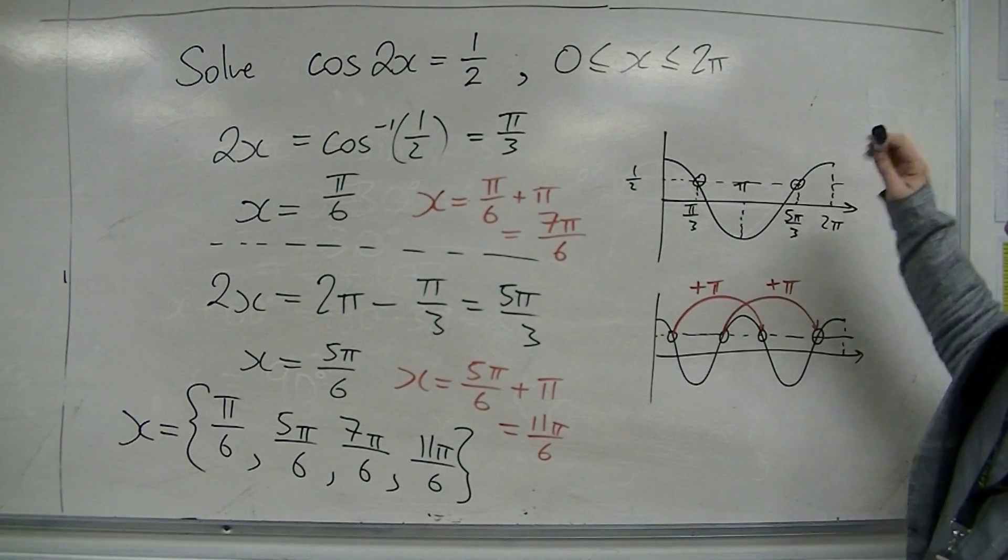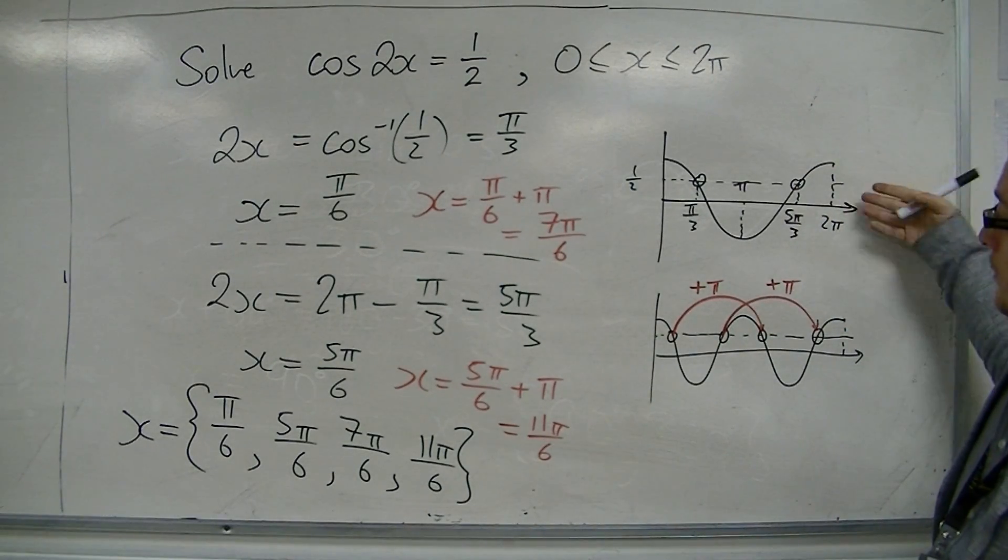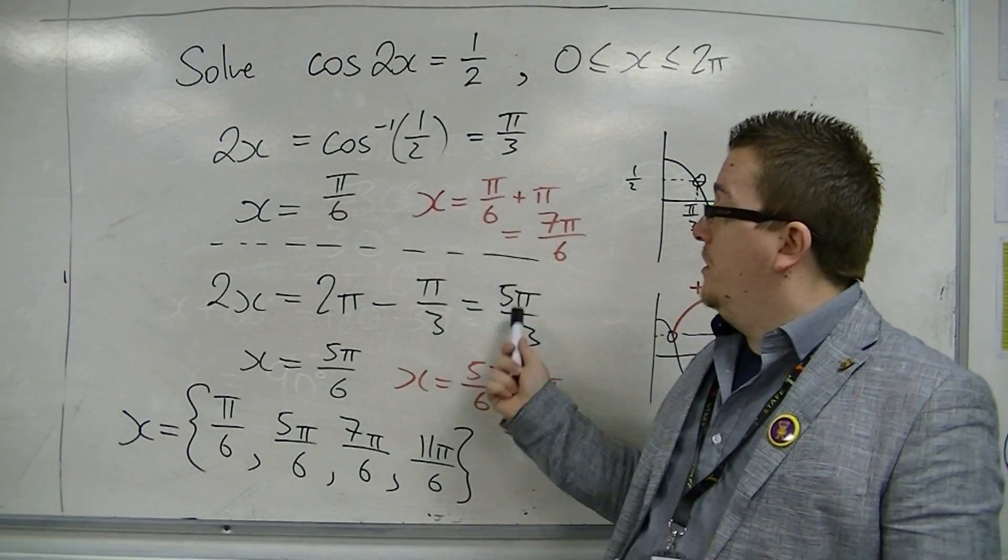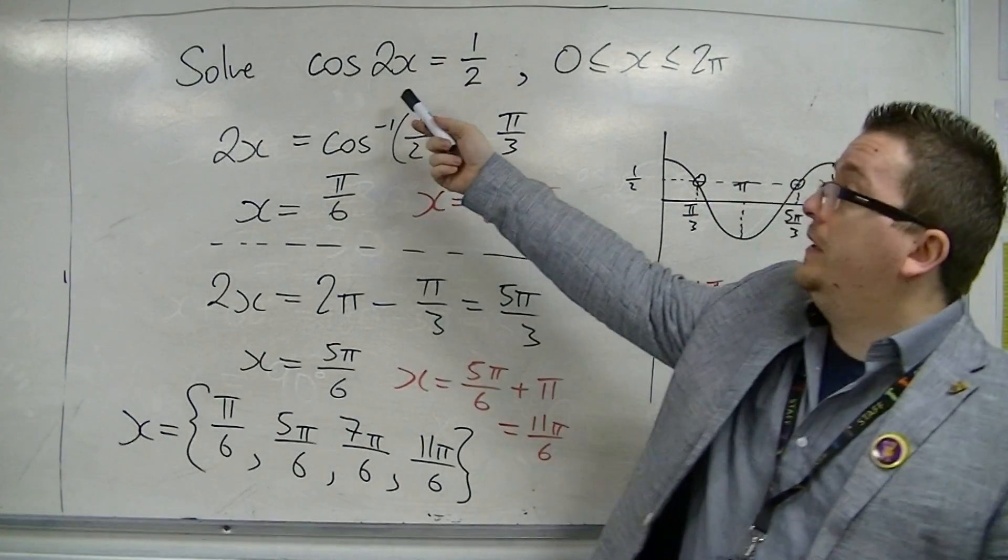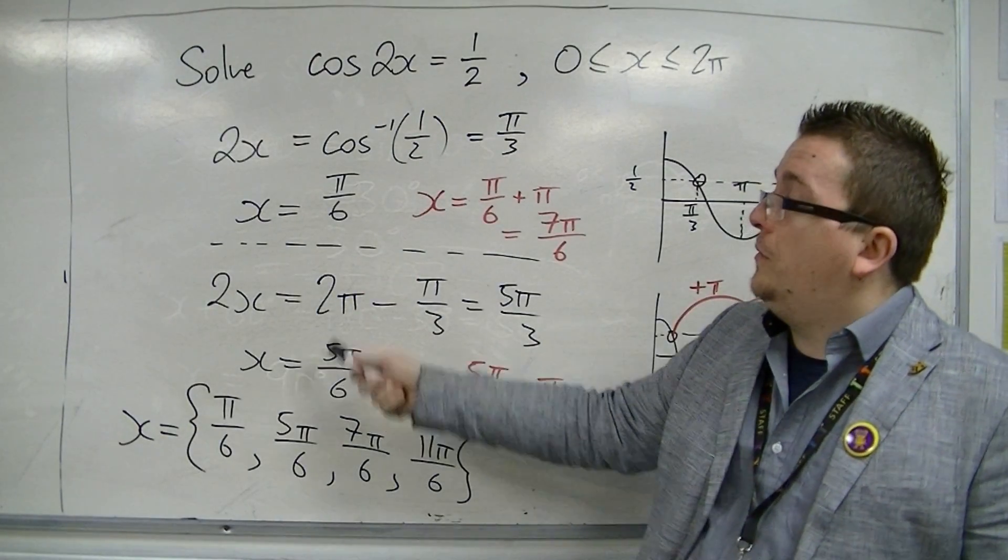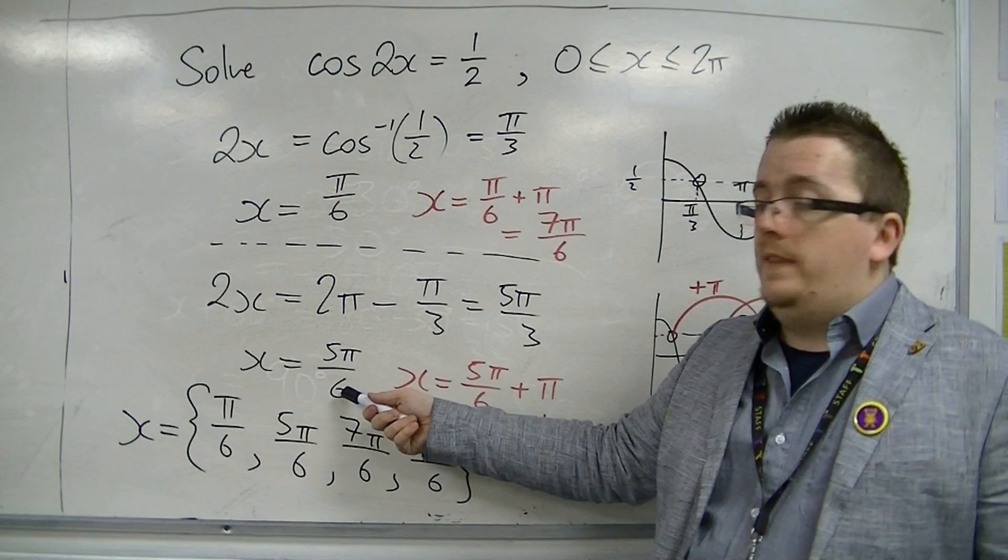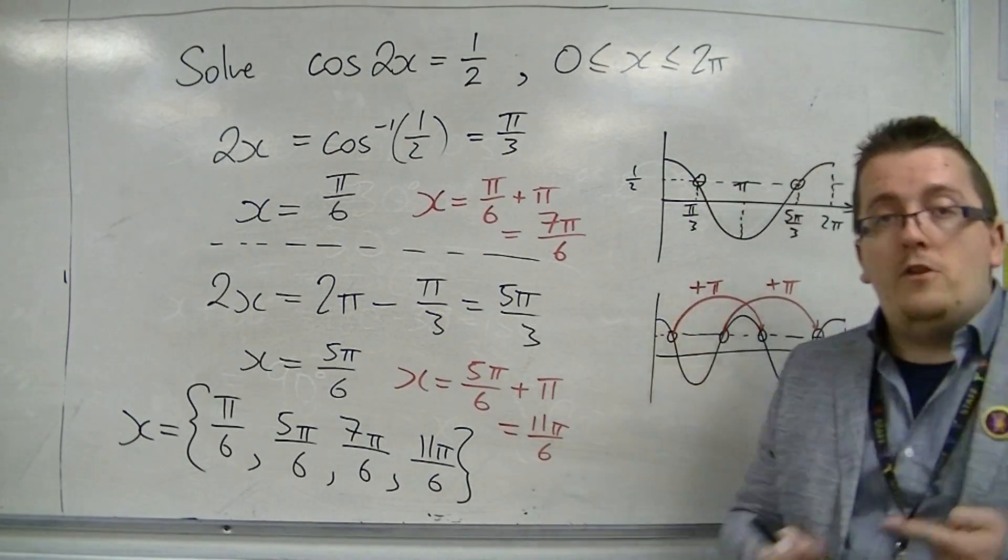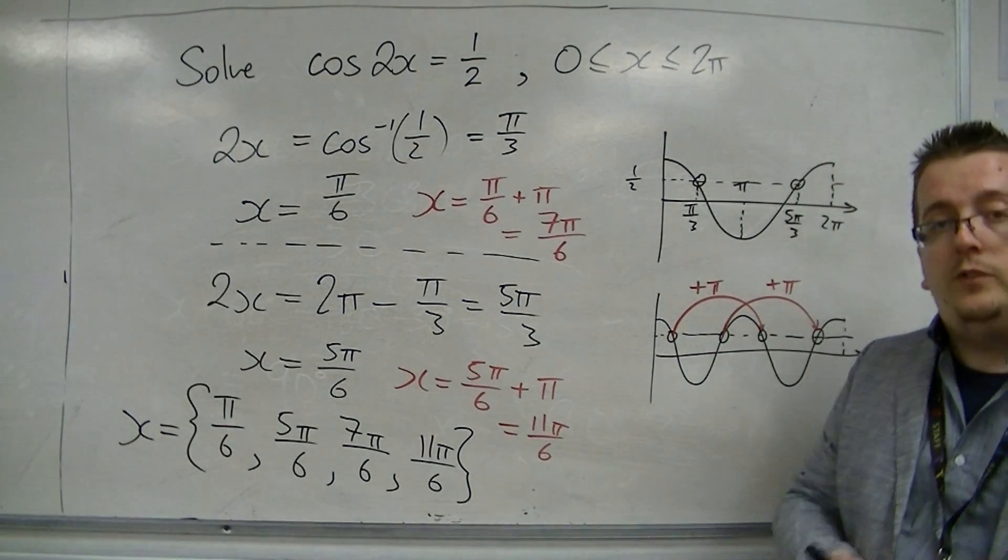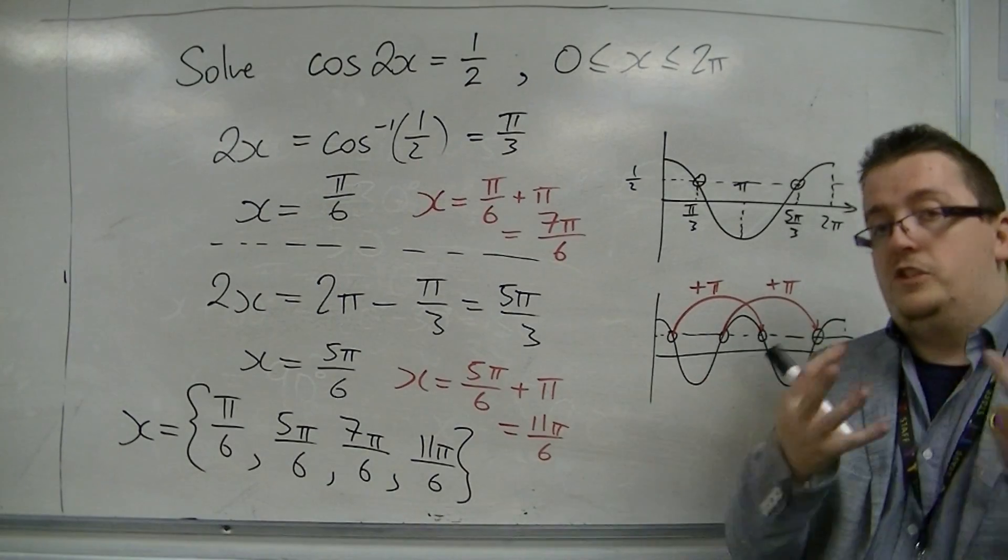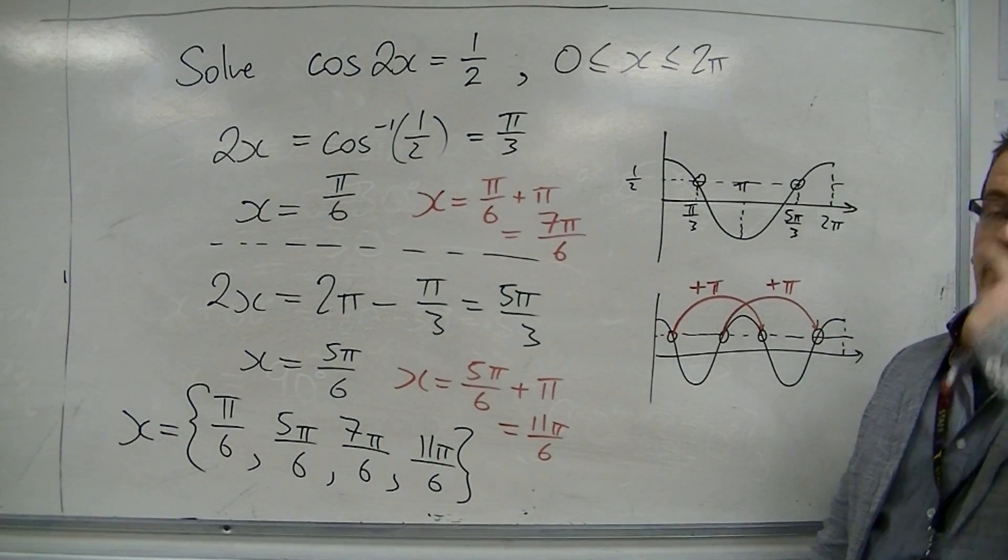So we work with the original cosine curve first, find the 2 solutions that we would usually have if I was solving cos x equals 1 half. I apply the transformation, so I divide it by 2 in this case, and then I add on amounts of the period of the curve cos 2x, which is pi. So adding pi and adding pi here brought me the 2 other solutions that I was looking for.